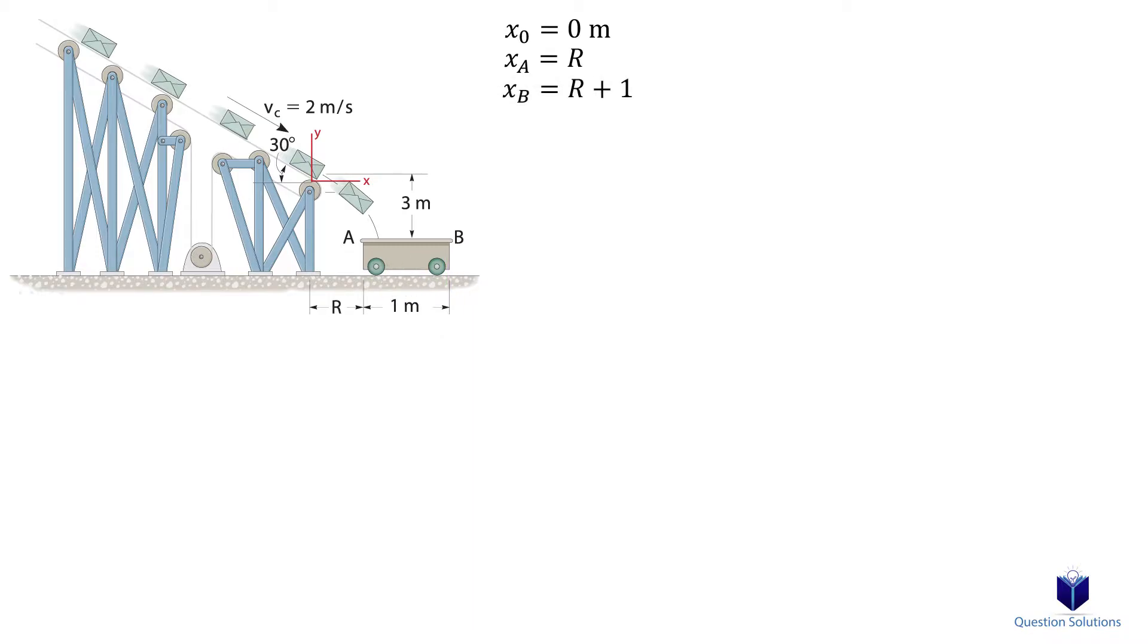The horizontal component of velocity is 2 cos 30 degrees, which is 1.732 meters per second.